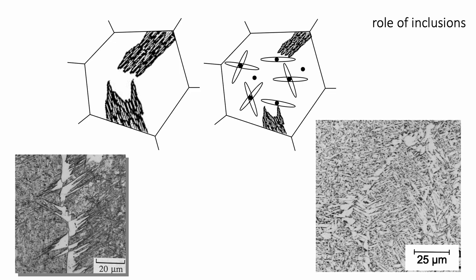We have seen that heterogeneous nucleation — intragranular nucleation on non-metallic inclusions — generates our acicular ferrite microstructure, whereas if we only get nucleation from the austenite grain surfaces then the plates tend to form in parallel formations where there isn't much difference in crystallographic orientation. Here is this kind of structure where the plates are shooting off in parallel formations from the austenite grain boundary. In contrast, this is the acicular ferrite structure where nucleation happens on non-metallic particles present inside the austenite grain, and this is a more desirable microstructure.